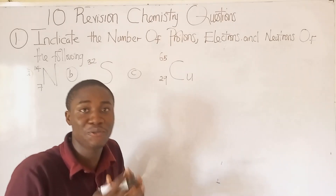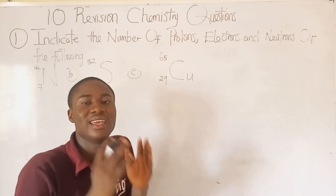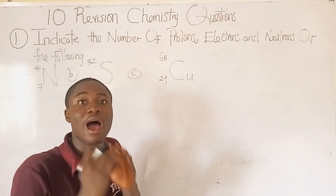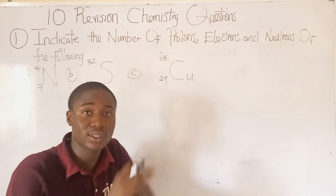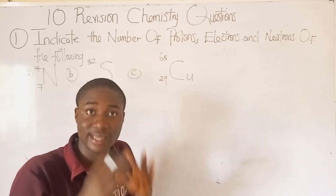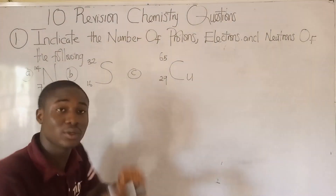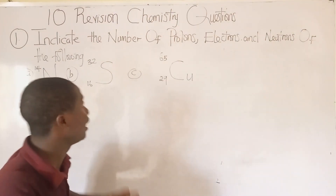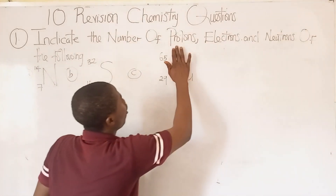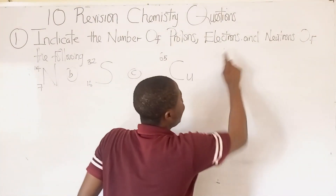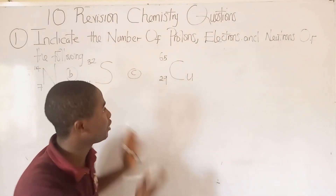Welcome to a new video lesson with Bright Airdo. In today's video lesson, I'll be solving various questions that come across different topics in chemistry. We'll be moving over to the first practice question, which is basically on how to determine the number of protons, electrons, and neutrons of an atom.